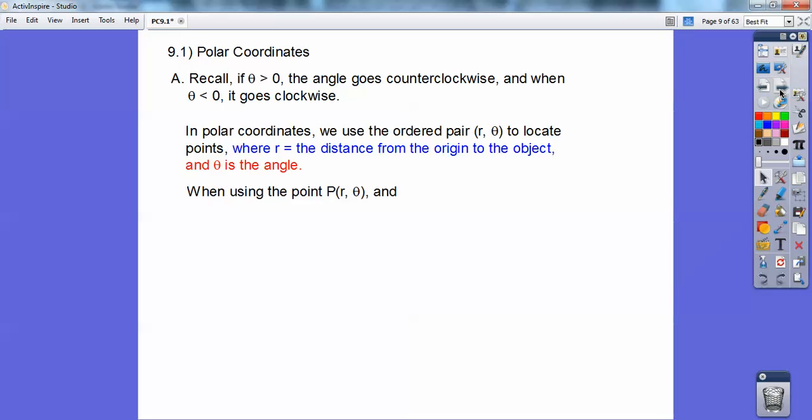So when using the point p, which means polar, r, theta, and if r is greater than zero, then p is on ray op. If r is less than zero, then p is on the opposite ray of op. You go in the opposite direction.